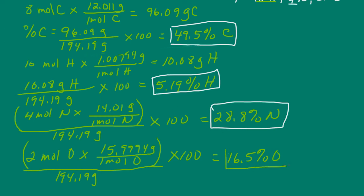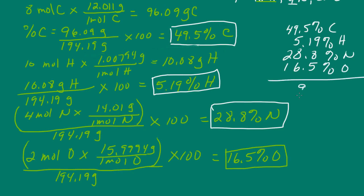Now, quick way to check your answer. All of these percentages should add up to 100. So we have 49.5 percent carbon. We have 51, or I'm sorry, 5.19 percent hydrogen. 28.8 percent nitrogen. And 16.5 percent oxygen. So we get 99.99 percent, which is 100 percent.